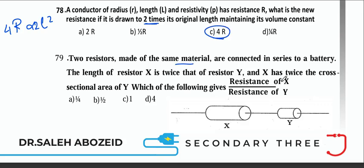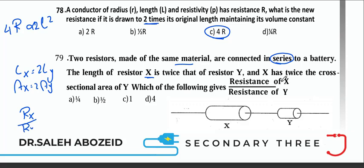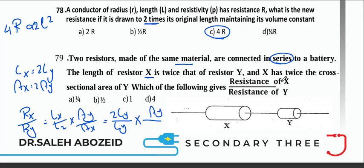Two resistors X and Y of same material are connected in series. L_X = 2L_Y and A_X = 2A_Y. R_X/R_Y = (L_X/L_Y)×(A_Y/A_X) = 2×(1/2) = 1. So R_X = R_Y, ratio is 1:1.